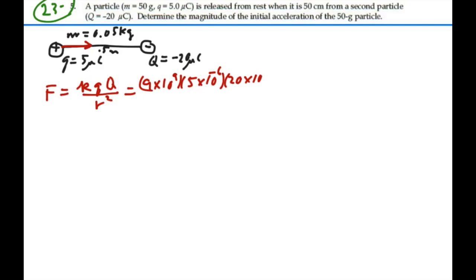And I don't have to put the negative in there because I've already accounted for the direction by my vector. And this is over a distance of 0.5 squared.